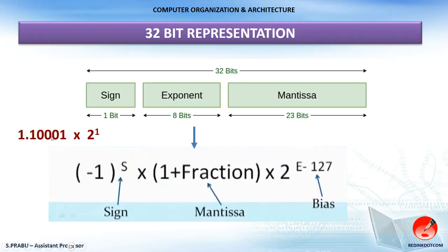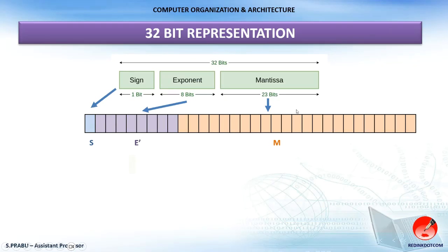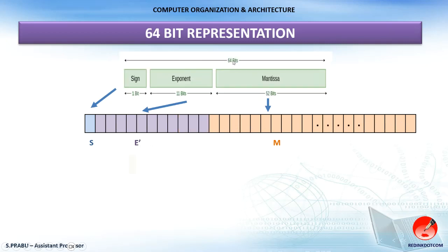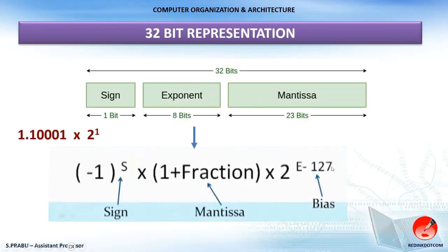We can fit this into a single-row table of 32 bits: the first bit is the sign bit, the following 8 bits are for the exponent value (represented as E′), and the remaining 23 bits are for the actual fractional number. Similarly for 64-bit representation: the first bit is the sign bit, the following 11 bits are for the exponent value, and the remaining 52 bits are for the actual fractional number or mantissa. In an exam, you can use dots to indicate the 52-bit mantissa columns.